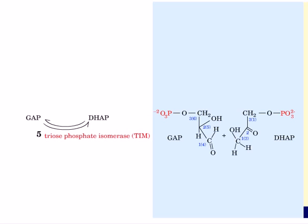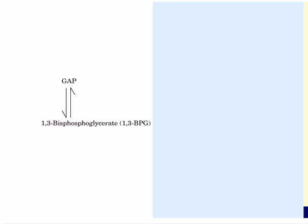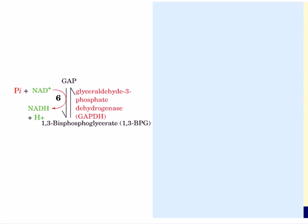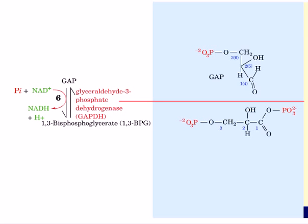The sixth reaction is the conversion of glyceraldehyde 3-phosphate to 1,3-bisphosphoglycerate. This reaction is catalyzed by glyceraldehyde 3-phosphate dehydrogenase and it requires NAD+ and inorganic phosphate. The inorganic phosphate is incorporated into glyceraldehyde 3-phosphate to convert it into 1,3-bisphosphoglycerate.